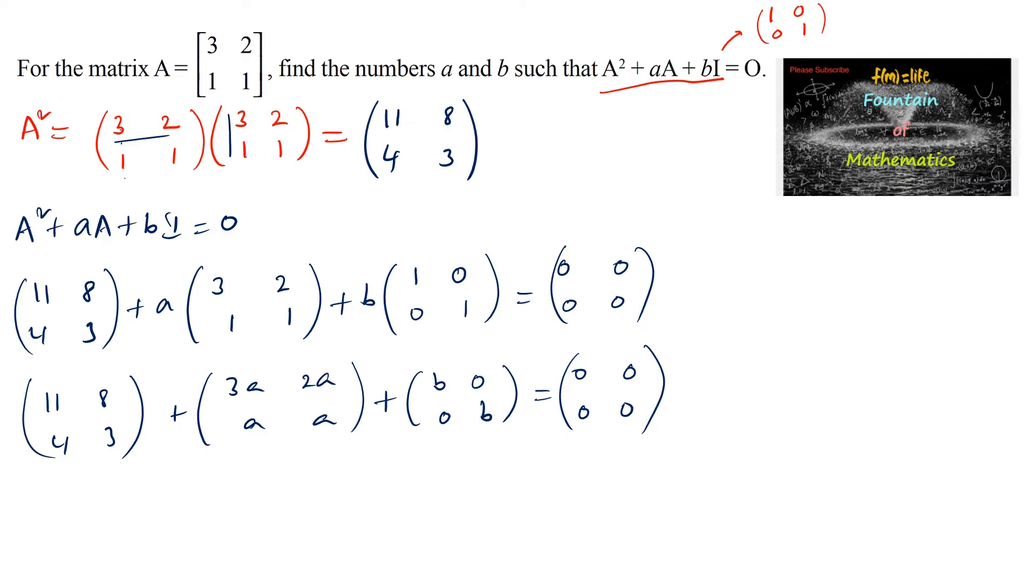We can consider 8 + 2a + 0 = 0. Corresponding elements addition equals 0 on the other side. So 2a = -8, which means a = -4. The value of a is negative 4.